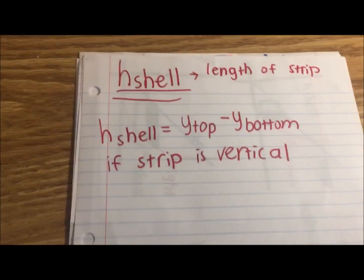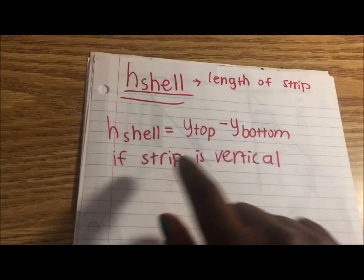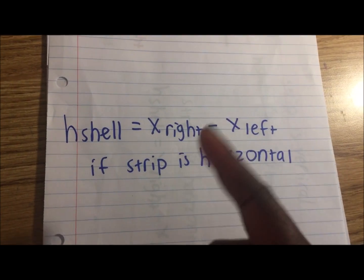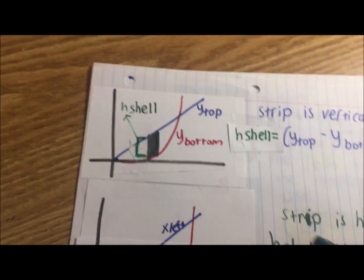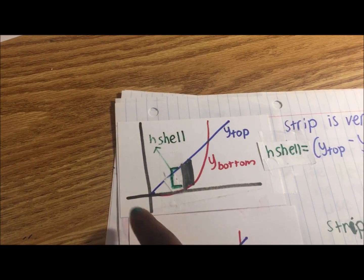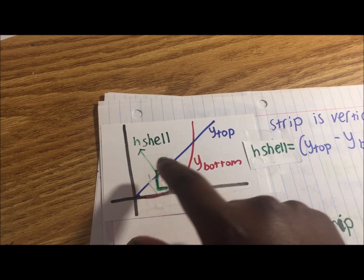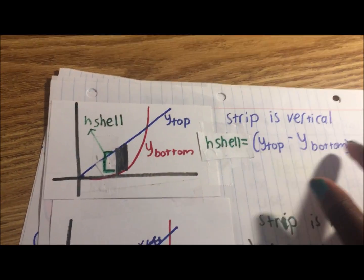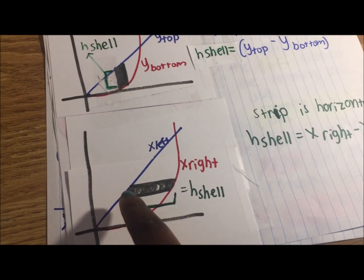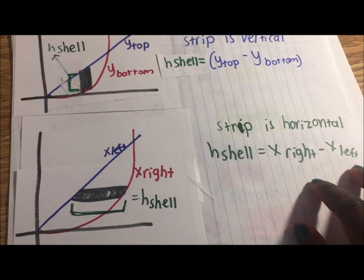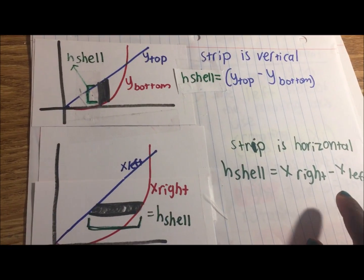Now that we've learned about r_shell, let's learn about h_shell. H_shell is basically the length of the strip. If you remember from area, when the strip is vertical, the length of the strip is y_top minus y_bottom. And it's x_right minus x_left when the strip is horizontal. Looking at the graph, y_top touches the top of the strip and y_bottom touches the bottom. H_shell is just the length of that strip. When the strip is horizontal, h_shell is x_right minus x_left.